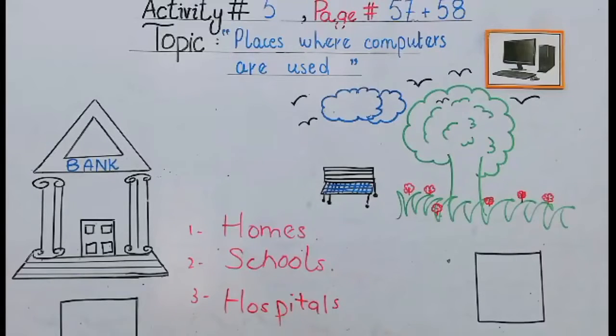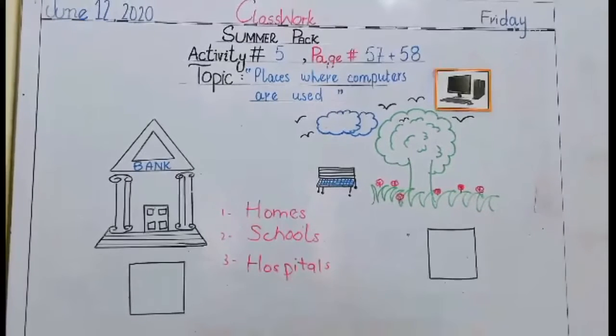Now you can see that we have two pictures, right and left. First picture is shown in bank. So what do we do? We have a part on page 57. Look at the pictures and color box where computer is used.